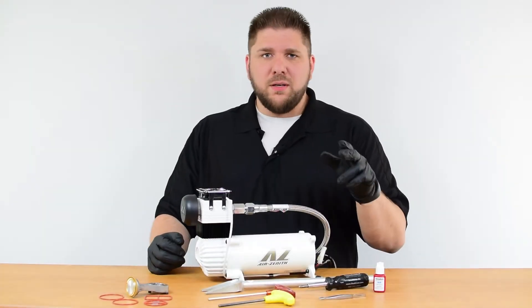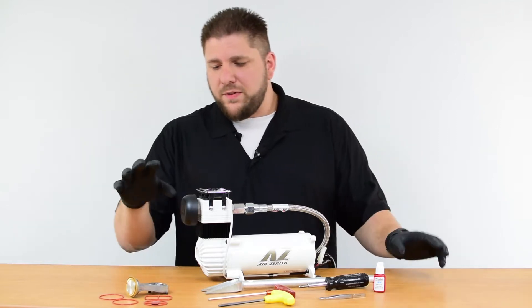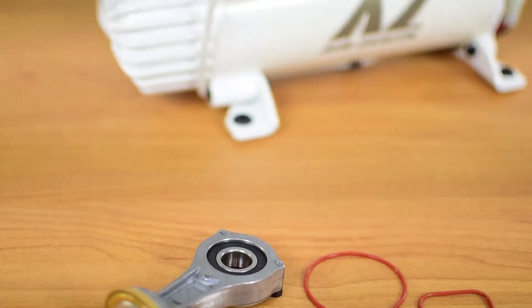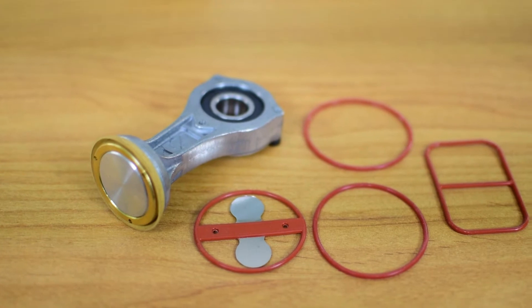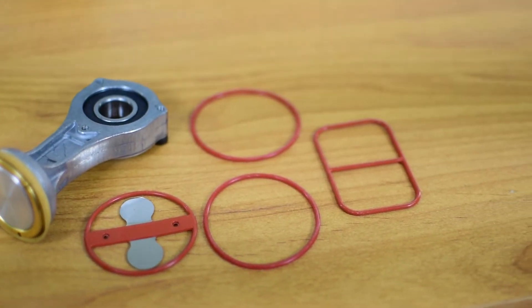Hi, Doug here with Air Zenith. Today we'll be rebuilding the Air Zenith OB2 compressor. The things you're going to need for today is first the Air Zenith rebuild kit. This rebuild kit comes with the full piston assembly with new piston ring and bearing. It also comes with two o-rings for the cylinder wall and an o-ring for the valve assembly, as well as a new set of valve plates for inside the compressor valve block.